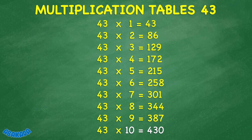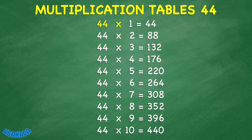43 times 10 equals 430. 44 times 1 equals 44. 44 times 2 equals 88. 44 times 3 equals 132.